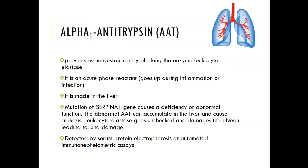The next one is alpha-1 antitrypsin. This protein prevents tissue destruction by blocking the enzyme leukocyte elastase that is produced by neutrophils. It is an acute phase reactant, so it goes up during inflammation or infection, which makes sense because neutrophils would be more active in those cases and you would need more alpha-1 antitrypsin to block the leukocyte elastase.